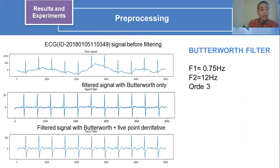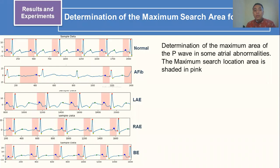Here is a visualization of the Butterworth filter output. The top plot is the signal before filtering. The second is the application of the Butterworth filter only. The third is the implementation of the Butterworth filter combined with the five-point derivative. Below that is the determination of the maximum search area for the P-wave.